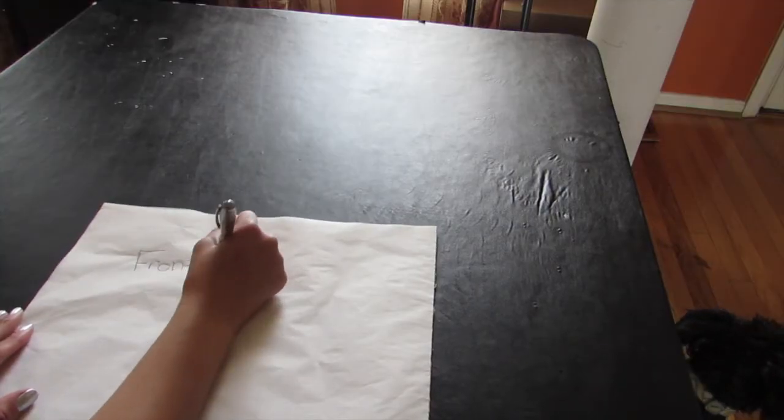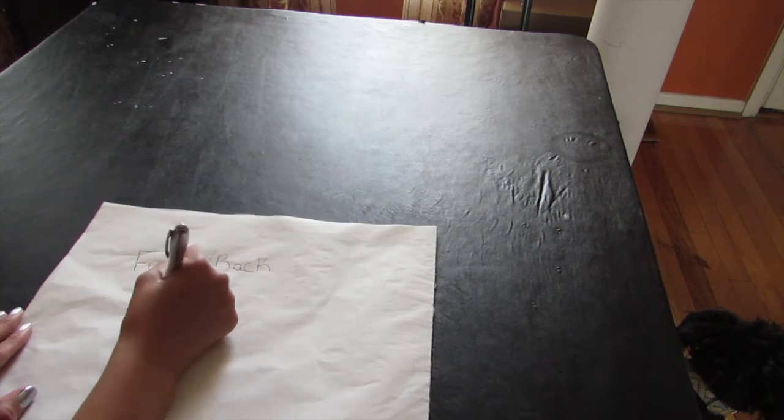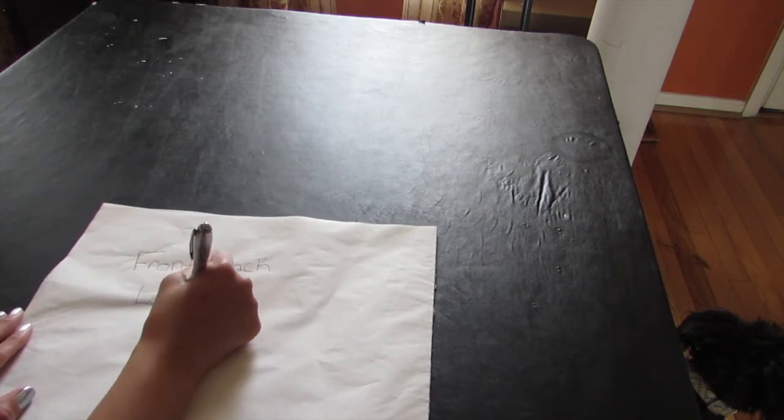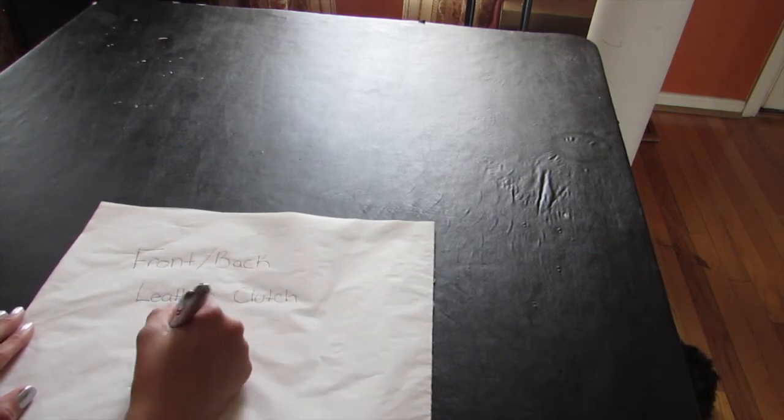First take a sheet of your tracing paper. This will be your pattern piece for both the lining and the faux leather fabric. My clutch is 9 by 12 but of course you can make it whatever size you would like.